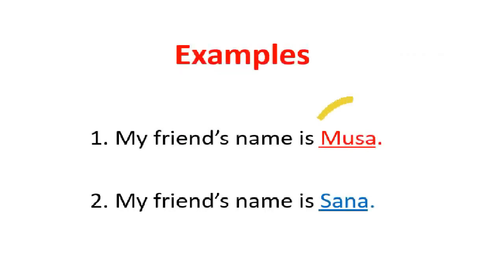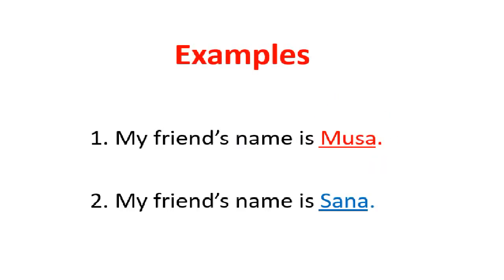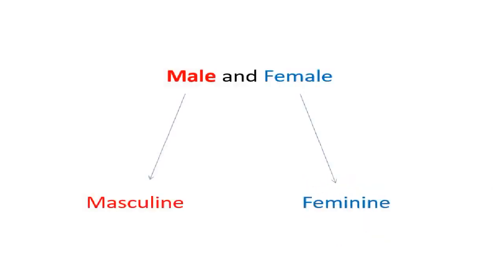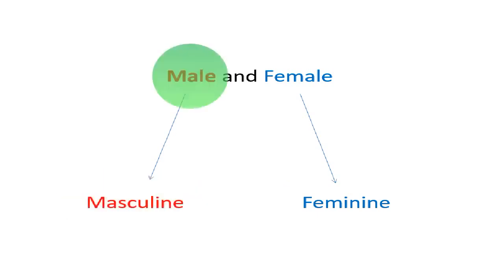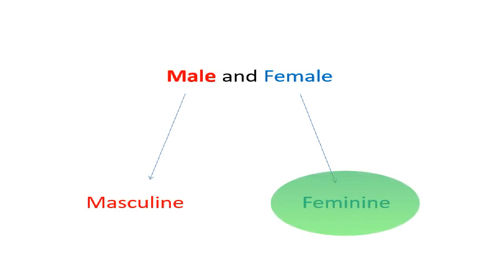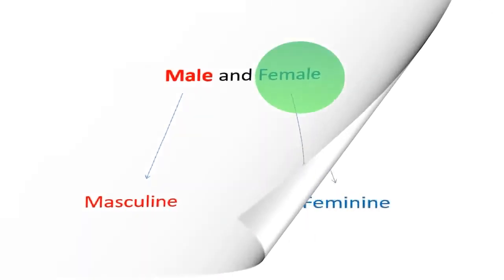We come to know that the name Musa is used for male; similarly, the name Sana is used for female. We have different naming words for male and female. These words are called masculine and feminine. Whenever I say masculine, it means I am talking about males. Similarly, when I say the word feminine, it means I am talking about females.